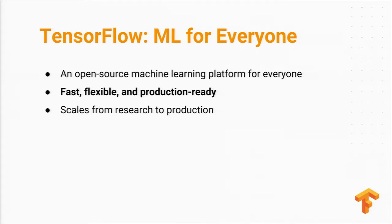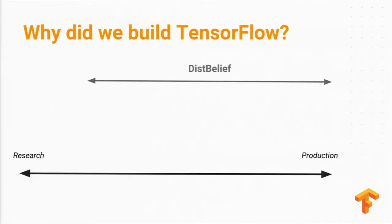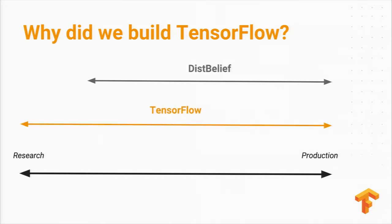We're trying to scale from research to production. Before TensorFlow, the Google Brain team put together a framework called DistBelief that was pretty good at scaling to production and underlay many of the early results in this recent wave of machine learning. But it wasn't flexible enough, and so TensorFlow was a second-generation system intended to span this whole spectrum.